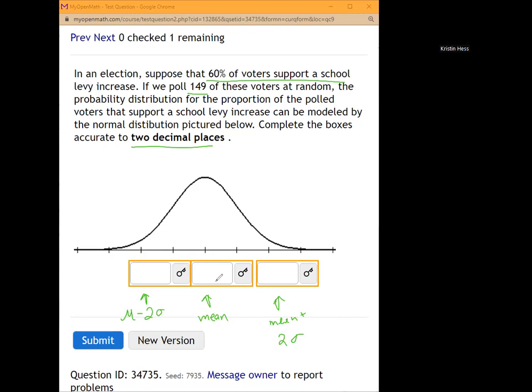So here, our mean we're going to put in 0.6. And to find our standard deviation, we're going to use the formula where our standard deviation of a proportion is going to be the square root of p times q over n.